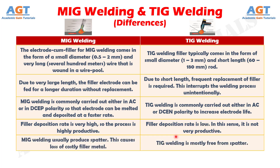Number 9: MIG welding usually produces spatter. This causes loss of costly filler metal, whereas TIG welding is mostly free from spatter.